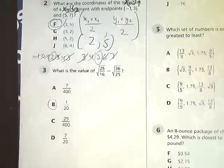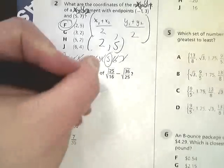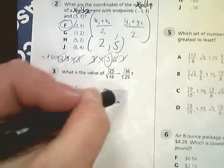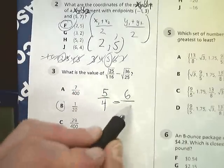I could also look at it like this. I know that the square root of 25 is 5, the square root of 16 is 4, the square root of 36 is 6, and the square root of 25 is 5.